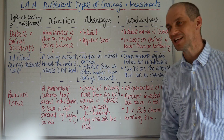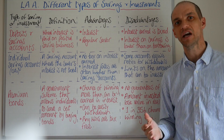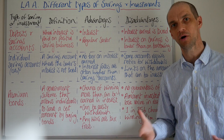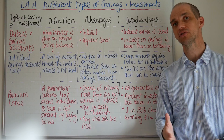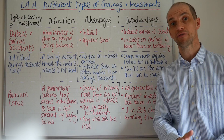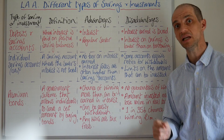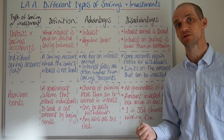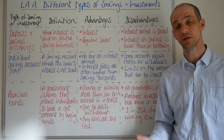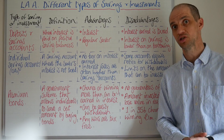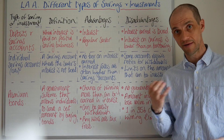Hi everyone. Let's take a look at different types of savings and investments that can be undertaken by individuals. Starting with deposit savings accounts — this is different from a current account. Current accounts are designed for daily use, daily inflows and outflows of money, and generally they don't offer great interest returns, although there are some exceptions where current accounts can offer a good level of interest.